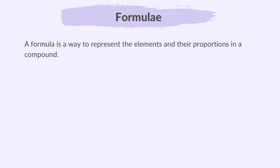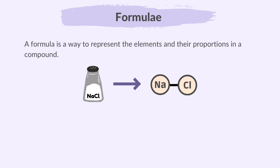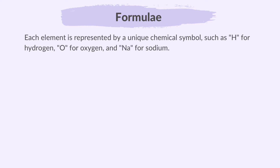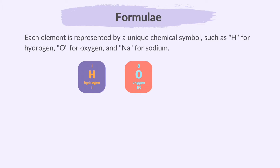A formula is a way to represent the elements and their proportions in a compound. For example, the formula for table salt is NaCl, or sodium chloride, indicating one sodium atom and one chlorine atom in the compound. The symbols of elements are shown in the periodic table. Each element is represented by a unique chemical symbol such as H for hydrogen, O for oxygen, and Na for sodium.